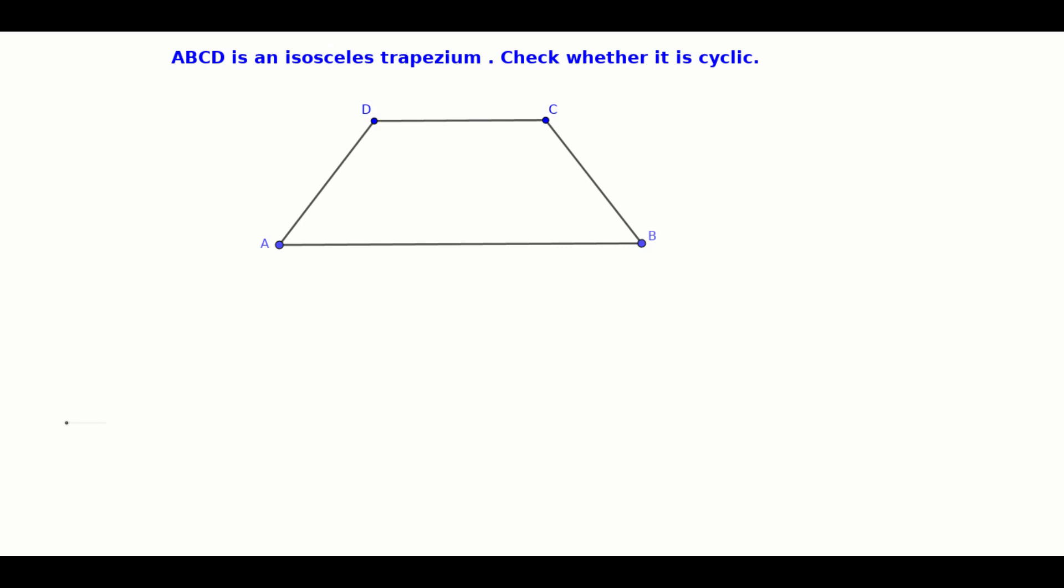Here, AB and CD are the parallel sides. The non-parallel sides are AD and BC.